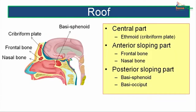The roof of the nasal cavity is formed in the central part by the ethmoid bone — that is the cribriform plate of the ethmoid. The anterior sloping part is formed by the frontal bone and the nasal bone, while the posterior sloping part is contributed by the basisphenoid and the basiocciput.